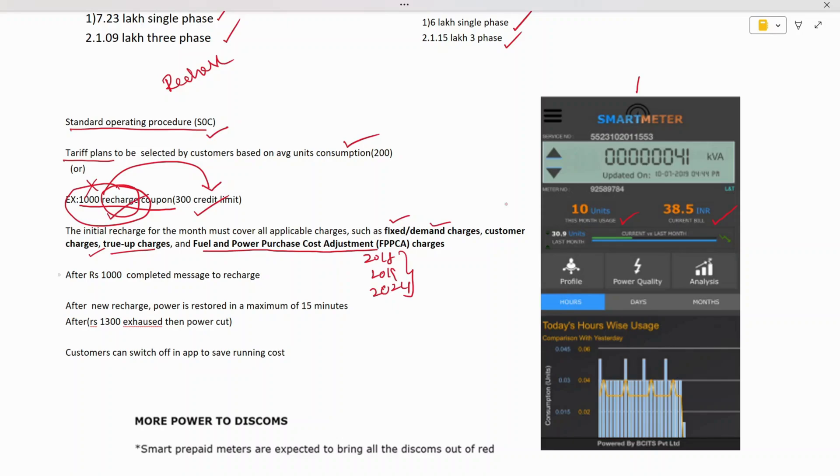For the first recharge selected as thousand rupees, they provide a number of units and you start consuming. It will be shown like this: how many units have been consumed and the amount left in your balance. After the thousand rupees has been exhausted from consumption, the power will not be interrupted. As soon as this recharge is completed, you'll get a message.